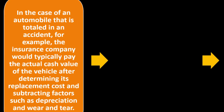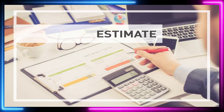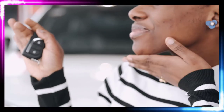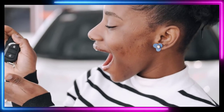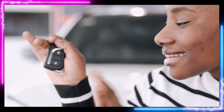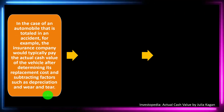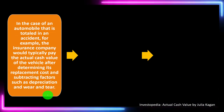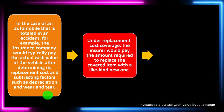In the case of an automobile that is totaled in an accident, the insurance company would typically pay the actual cash value of the vehicle after determining its replacement cost and subtracting factors such as depreciation and wear and tear. They might say: what would a new car cost, and then we depreciate it — if you had the car for five years, we calculate the depreciation over that time, meaning it's worth less than replacing it with a new car.